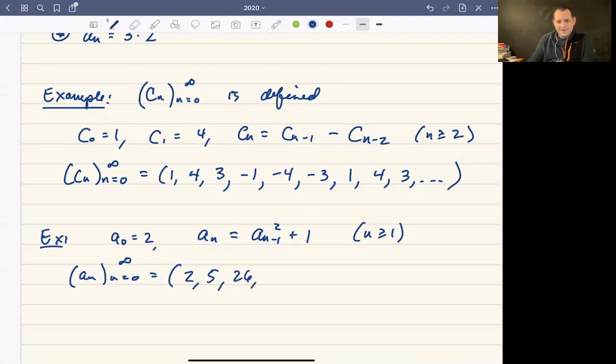26 squared, I did this to myself, 26 squared, I don't know what that is, but you're going to get 26 squared plus 1, whatever that number is. I've already started this, so we might as well just do this. This is going to be 676. So plus 1 will be 677, and so on. So very rapidly increasing sequence.